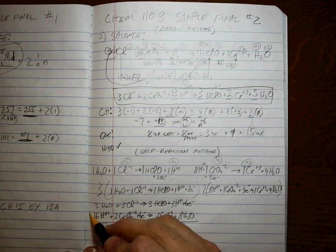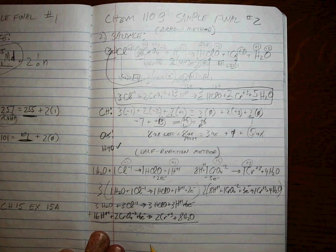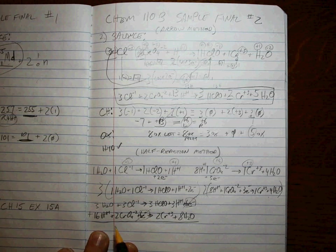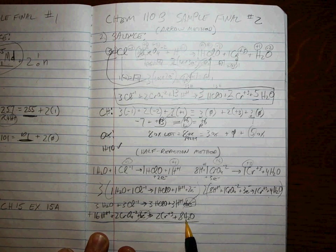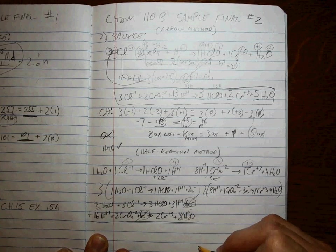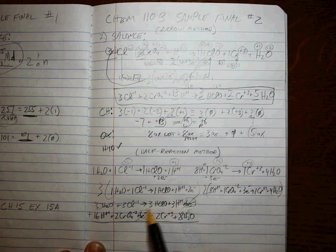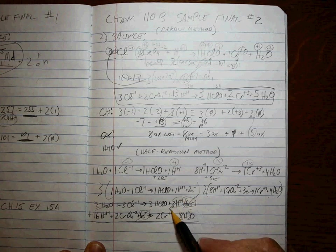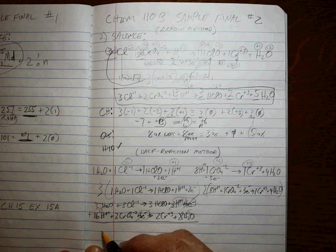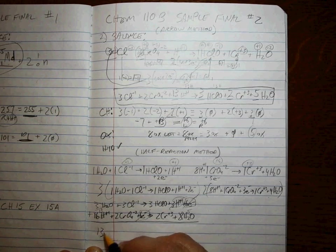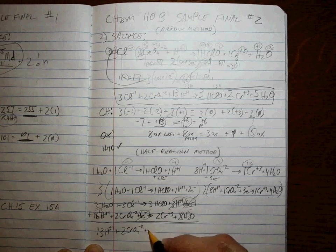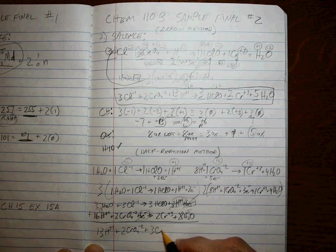Alright. So now we add those two together. But before we do, let's cancel out what we know is the same on both sides. The electrons. If we have three waters on this side and eight waters on this side, this ends up being five waters, right? And if we've got three H pluses on this side and 16 on this side, this cancels out and this ends up being 13. Alright. So now what do we add? We've got 13 H plus one plus two CrO4 minus two plus three Cl minus one.